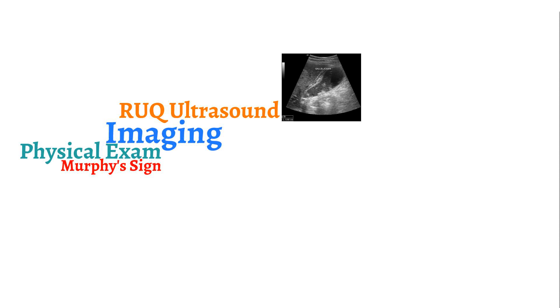Now that you have taken a history and done a physical exam, the next step in management is to obtain a right upper quadrant ultrasound. An ultrasound helps identify features of the gallbladder that indicate inflammation and can identify the presence of gallstones. Gallbladder inflammation is indicated by gallbladder wall thickening of greater than 4 to 5 millimeters with edema, noted by the so-called double wall sign.